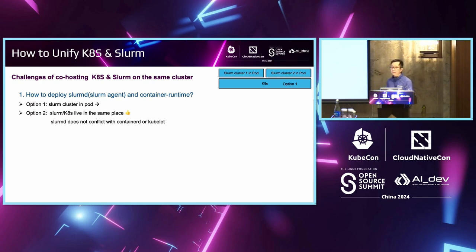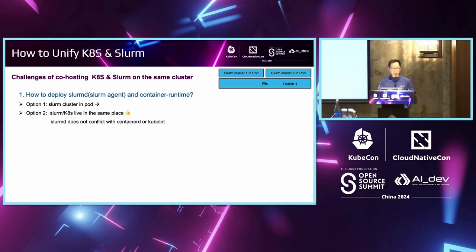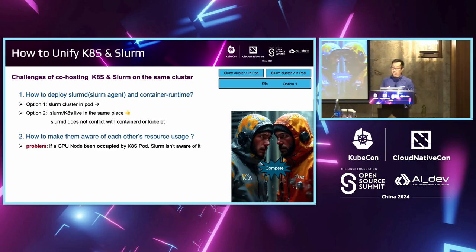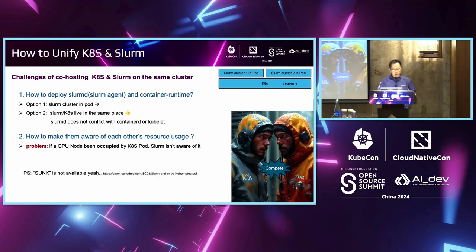Here is one of our attempts in TACC to unify Kubernetes and Slurm together. The question is how to deploy Slurm. The first option is to run Slurm inside a Kubernetes pod — one pod for one Slurm cluster. Option two is to have Slurm and Kubernetes co-exist on the same machines, because the Slurm daemon is just a Slurm agent and doesn't conflict with containerd or Kubernetes. The challenge is making them aware of each other — if a node is occupied by Kubernetes but Slurm isn't aware of it, they may schedule the same workload on the same node and compete. Our experimental approach is to have them co-hosted on the same machines.